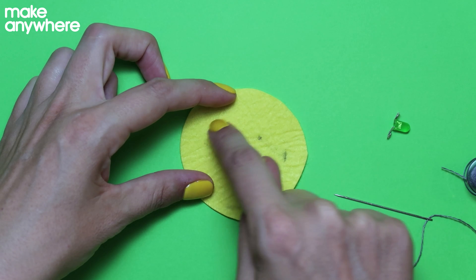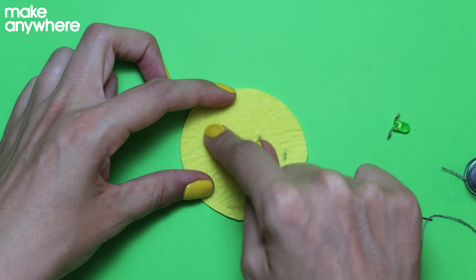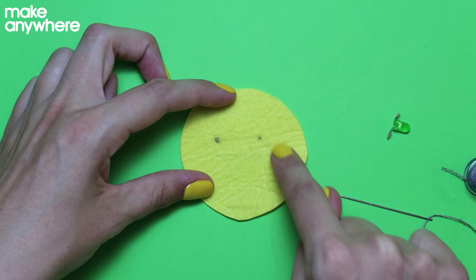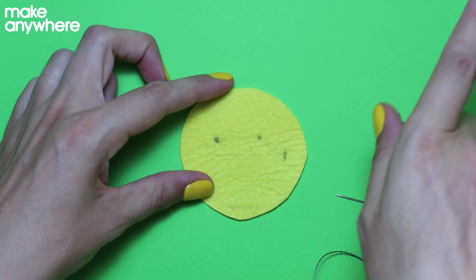Before we start stitching, we need to cut two little holes where the LEDs are going to poke through. So the wires will be on one side and the battery holder and our actual LED, the little light part, will be sticking through the other way.